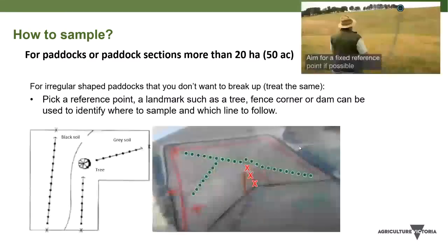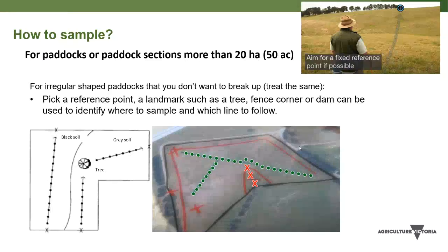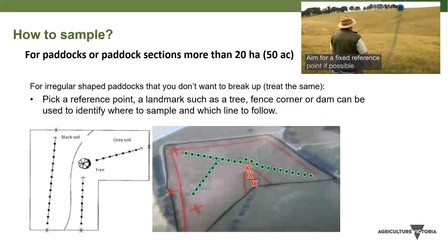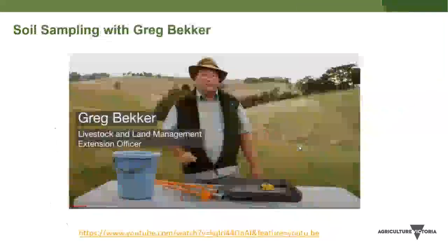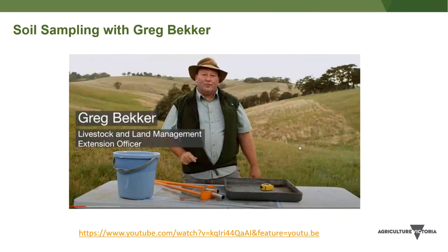For irregularly shaped paddocks you manage as a single unit — for example, one with both black and grey soil — pick a reference point such as a tree or fence corner, walk toward it, and repeat this approach for other parts of the paddock, taking soil cores at marked points across the whole area. A colleague, Greg Becker, has put together a great three-and-a-half-minute YouTube video covering all of this with excellent tips and tricks — a link to that will be sent through after the webinar.